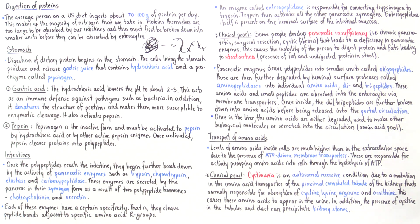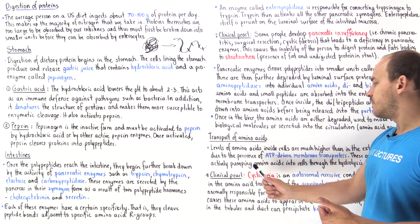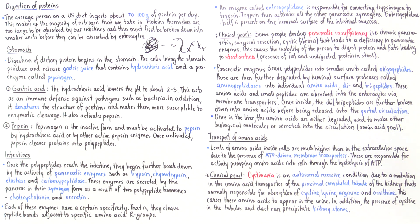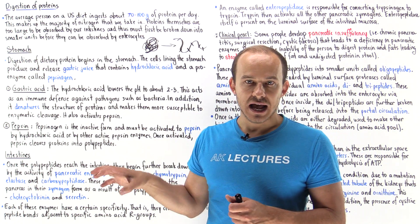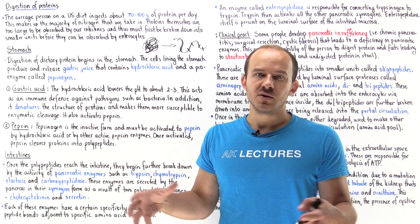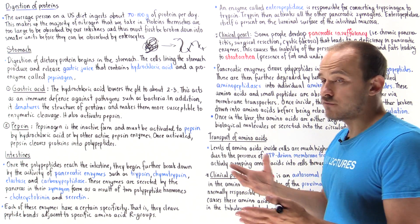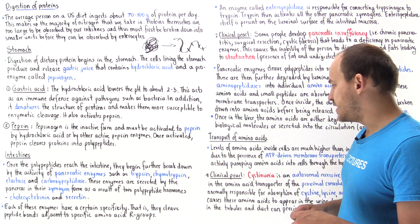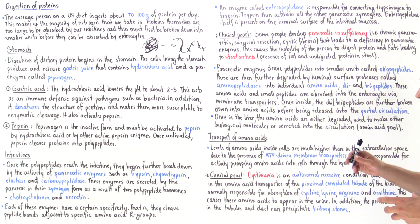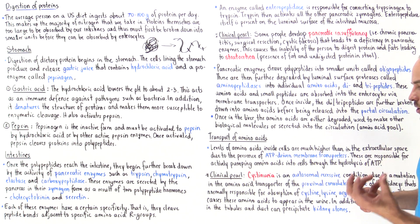Levels of amino acids inside cells are much higher than in the extracellular space due to the presence of these ATP-driven transporters present on these cells. They basically hydrolyze ATP and use the energy in that hydrolysis process to actively pump amino acids into the cell. Then the cell can use those amino acids for a variety of purposes, for example, to build new proteins or enzymes.